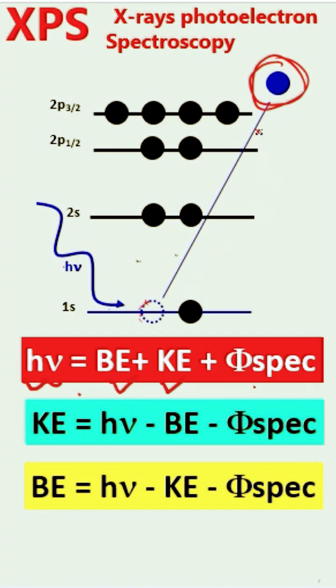In this technique, we only need to measure the kinetic energy of the photoelectrons. This kinetic energy is detected by the XPS detector, and then we can calculate the binding energy.